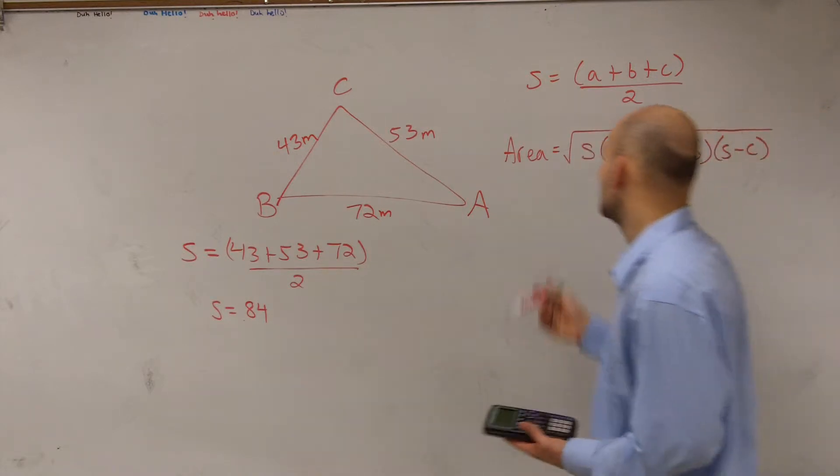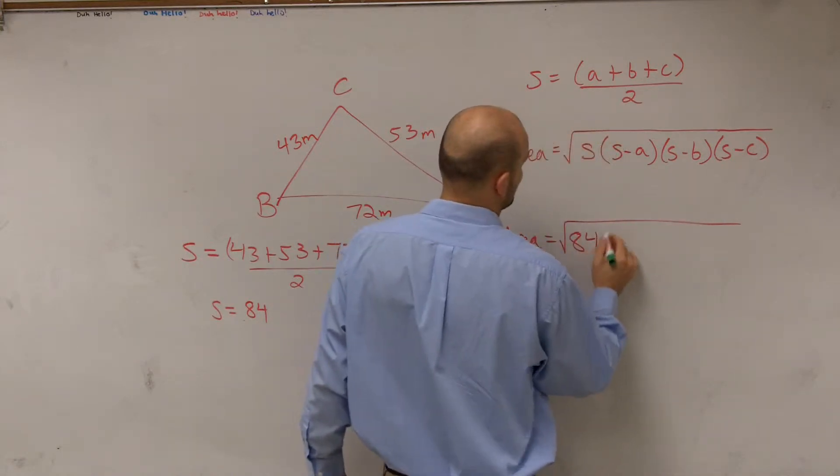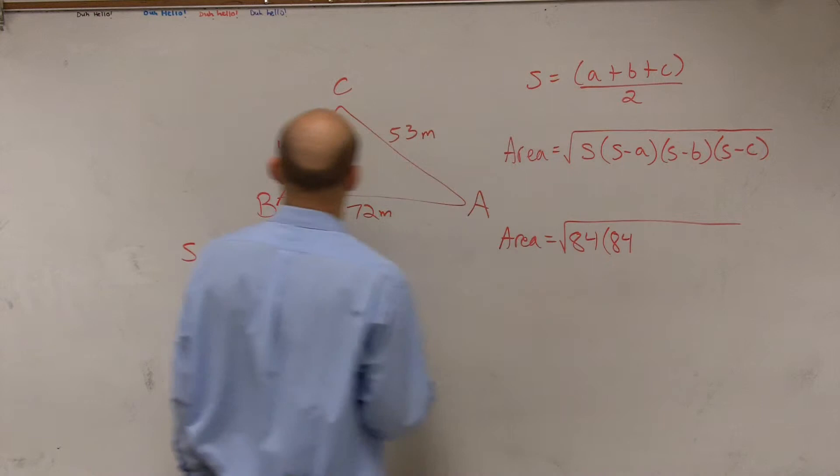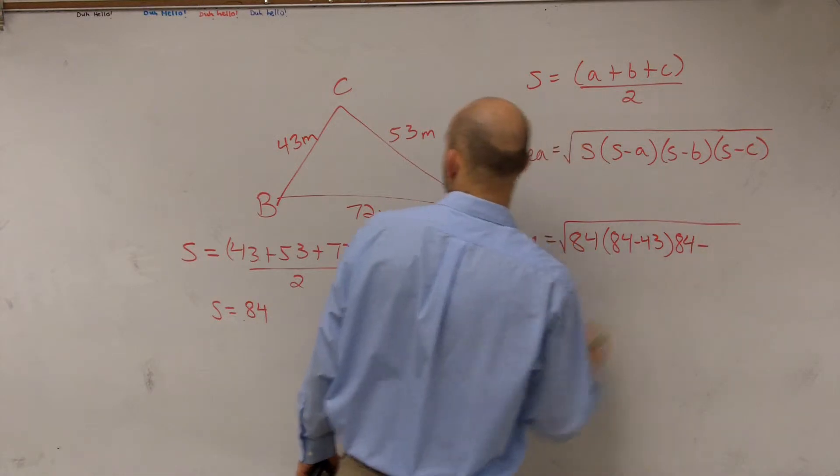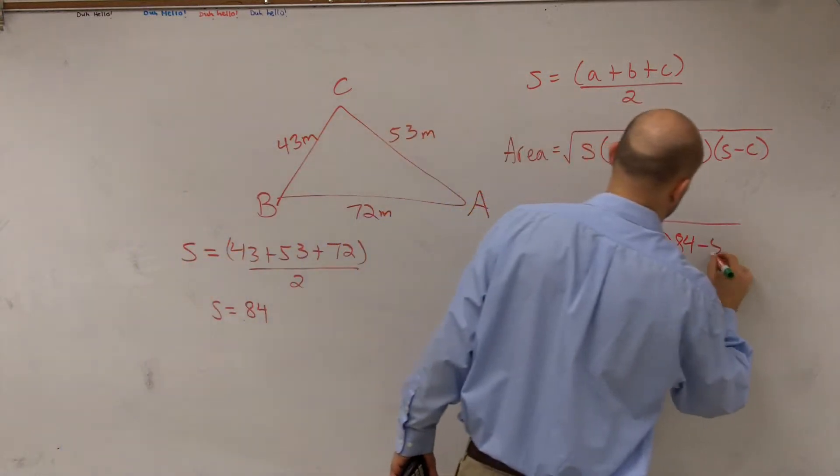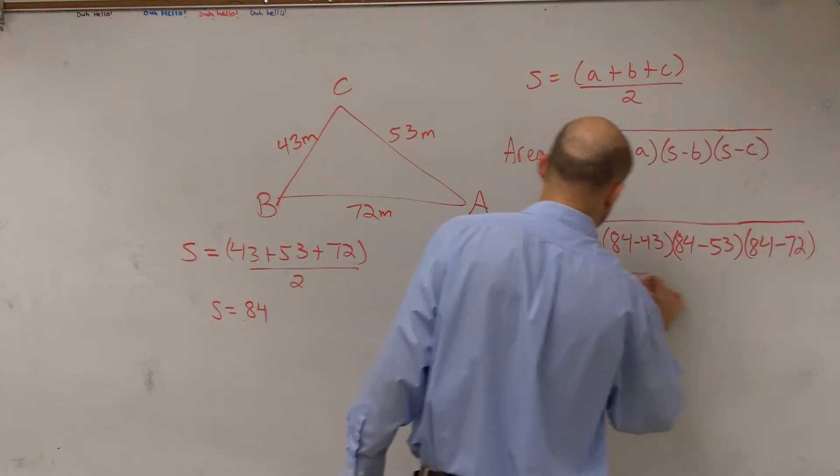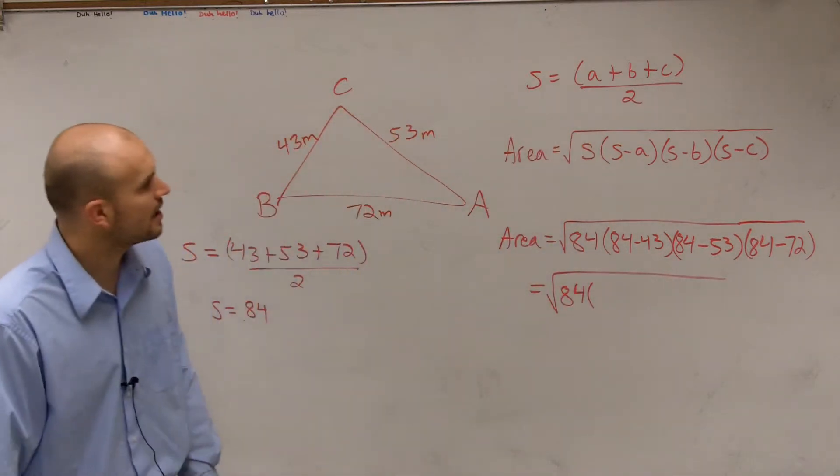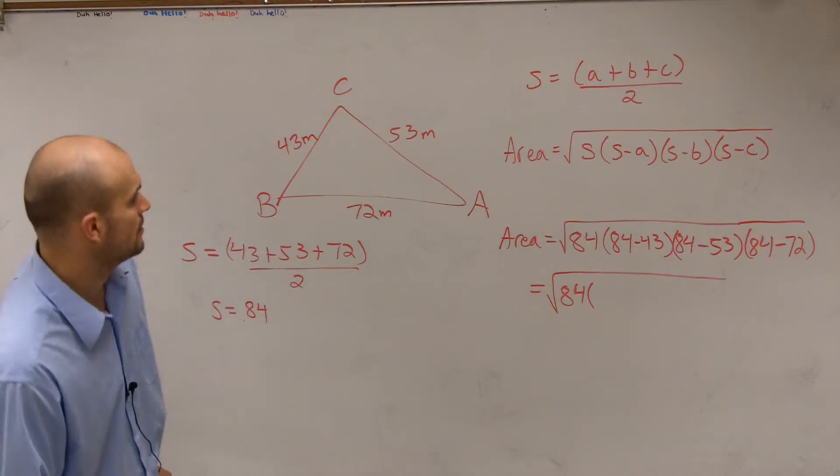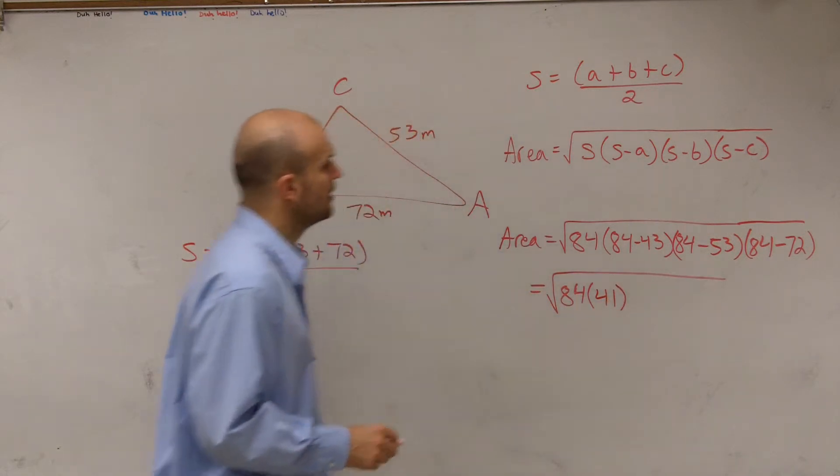I'm just simply going to plug that in. So my area now includes 84 times 84 minus a, which is 43, times 84 minus b, which is 53, times 84 minus 72. So that equals square root 84 times 84 minus 43 is going to be 41 times